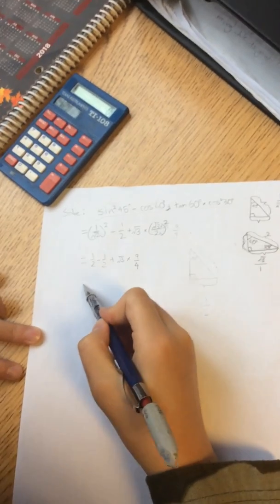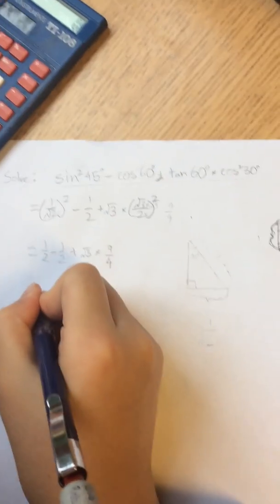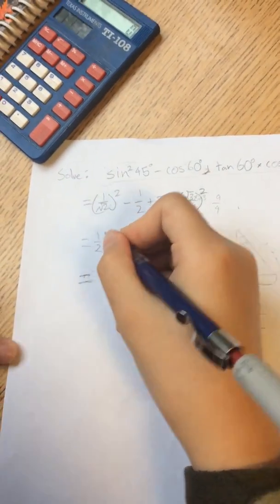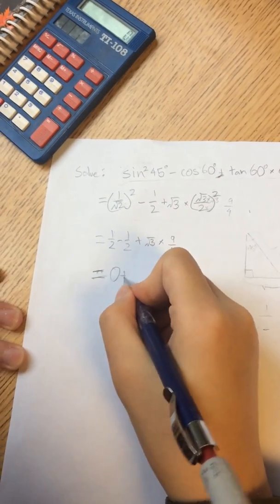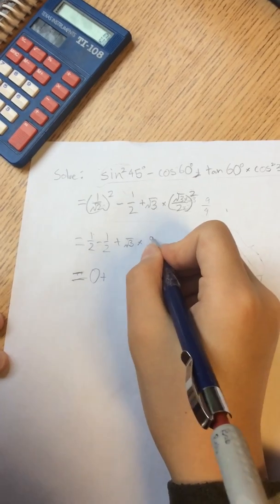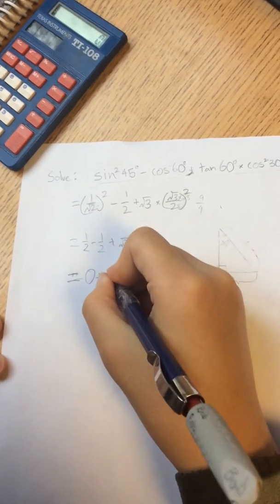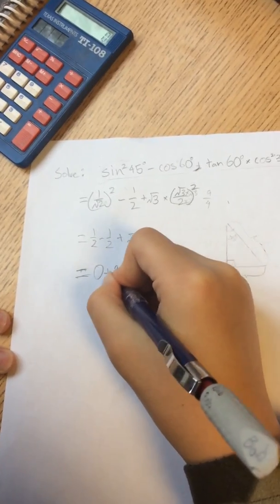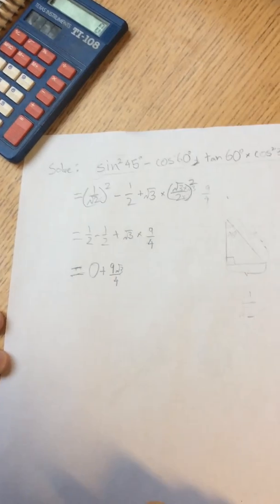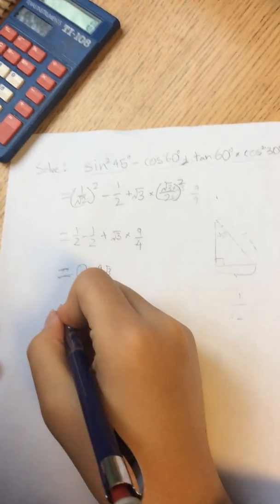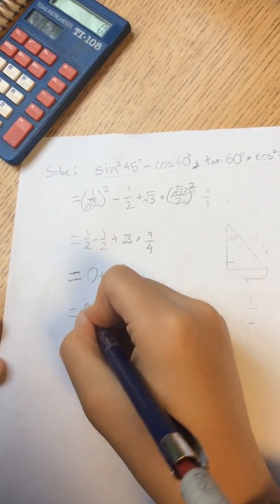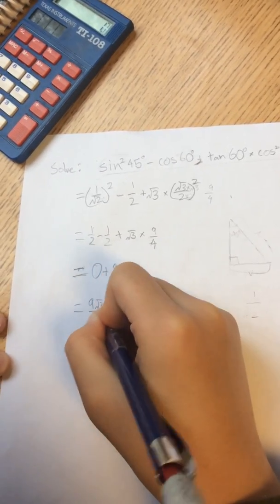And then, let's get to the next step. 1 over 2 minus 1 over 2, that's 0. So, 0 plus square root of 3 times 9 over 4. That's 9 and the square root of 3 over 4. So, the answer is square root of 3 over 4.